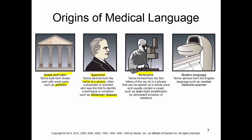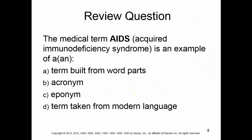Acronyms are terms formed from the first letters of the words in a phrase and can be spoken as a whole word — they usually contain a vowel. For example, laser. Laser is really 'light amplification by stimulated emission of radiation.' It's a lot easier to say laser than all of those words every single time. Modern language contains terms derived from the English language, such as nuclear medicine scanner. It doesn't fall into another category, so that's where it lands.